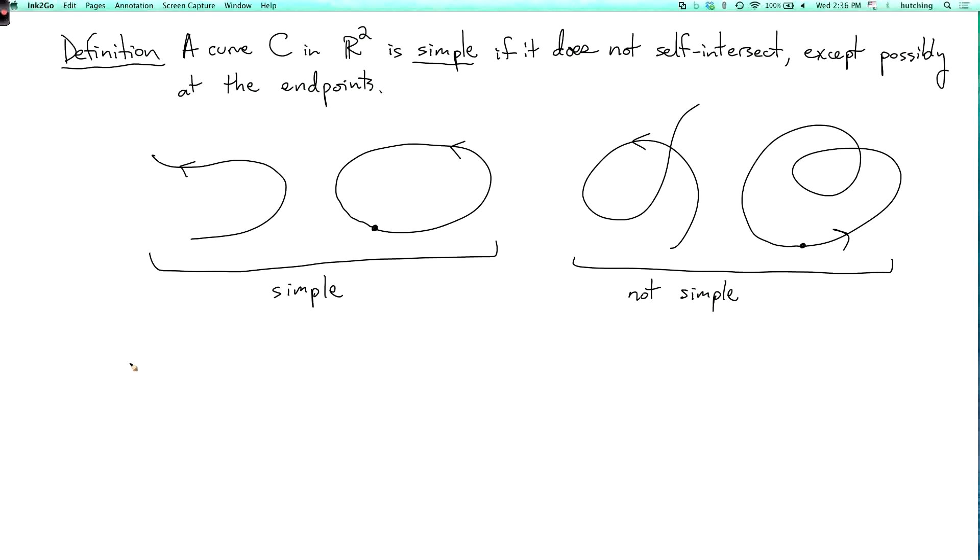The equations for this would be that if you have a parametrization r of t, where t goes from a to b, then simple means that r of t₁ is not equal to r of t₂ when t₁ is not equal to t₂.